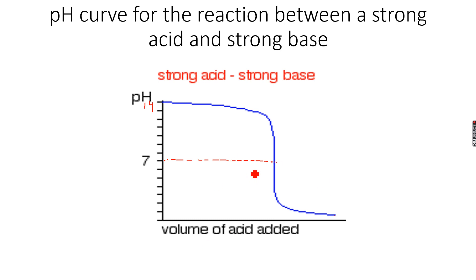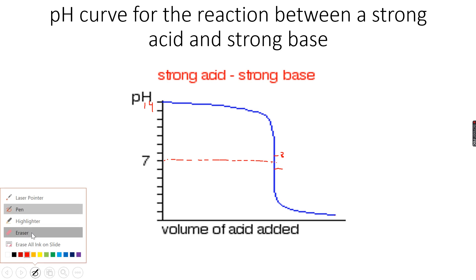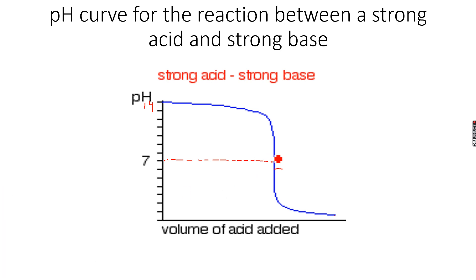The color change takes place at the equivalence point. An indicator gives a color change within one pH unit from the equivalence point. So if the equivalence point is seven, the color change will occur between approximately 6.5 and 7.5. Different indicators — such as methyl orange, bromothymol blue, phenolphthalein, or litmus — all give color changes over different pH ranges.